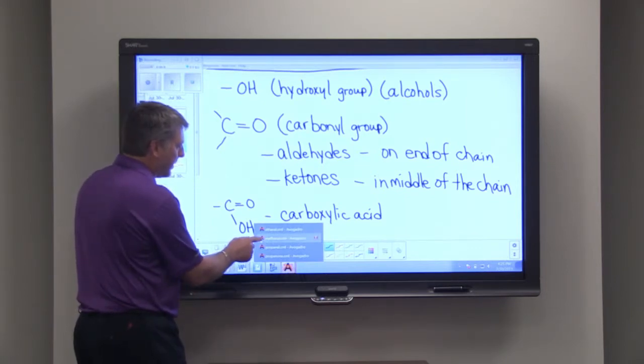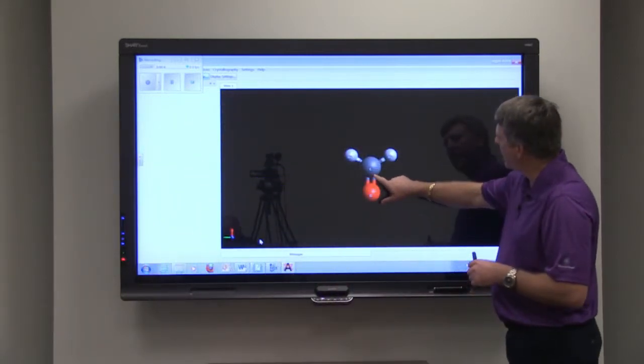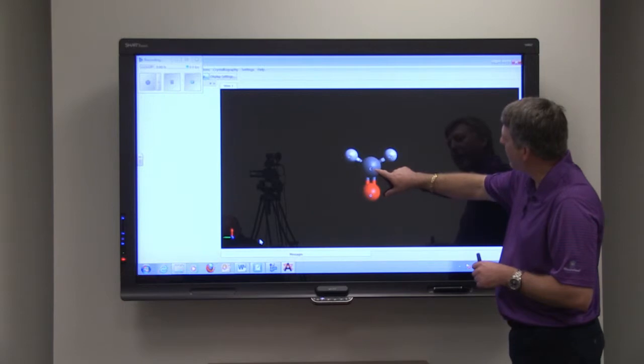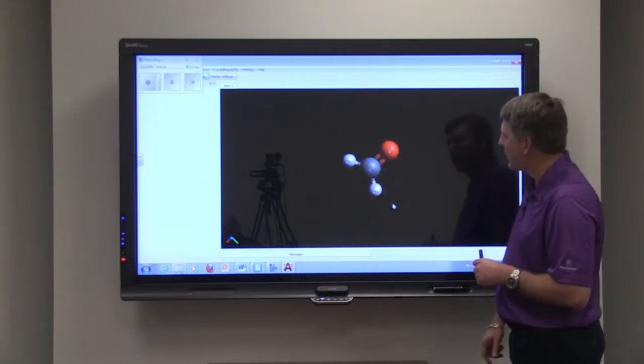The simplest is something called methanal, and you can see with methanal we have the carbon with the double bonded oxygen attached to it. It's one carbon, we have our double bonded oxygen here, and then two hydrogens.